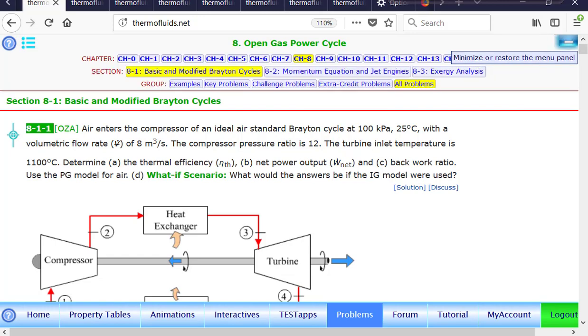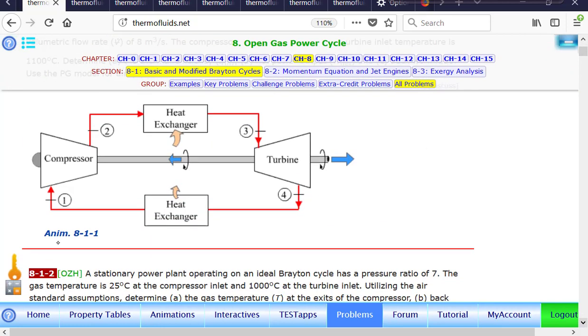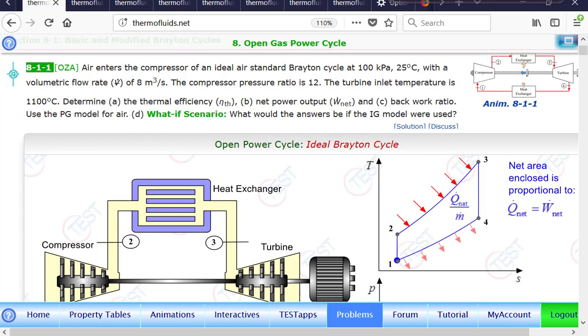So first thing we see here is the problem statement and here is a schematic for this particular problem. If you click on the schematic, most of the time, in case the bottom says animation, then if you click on the schematic, an animation of the relevant content appears from the animations module.